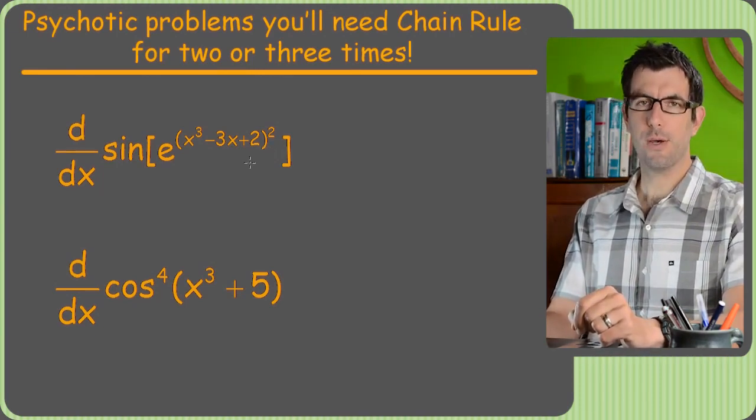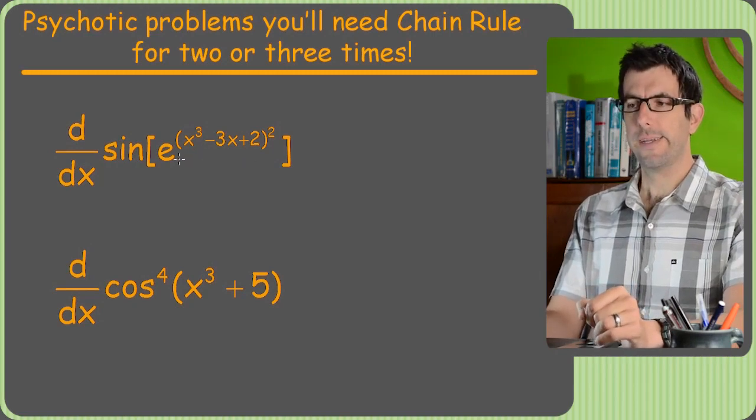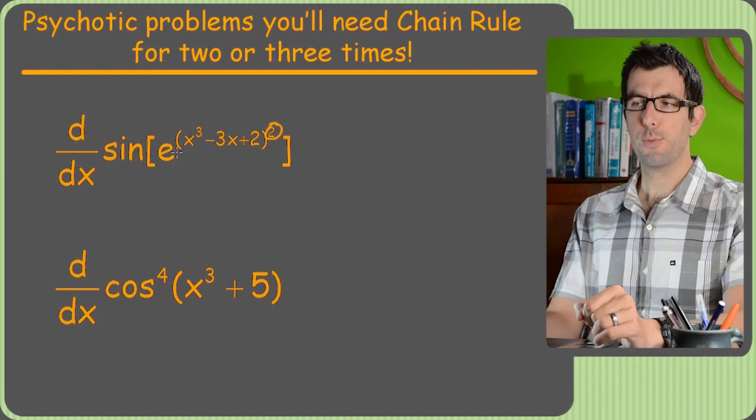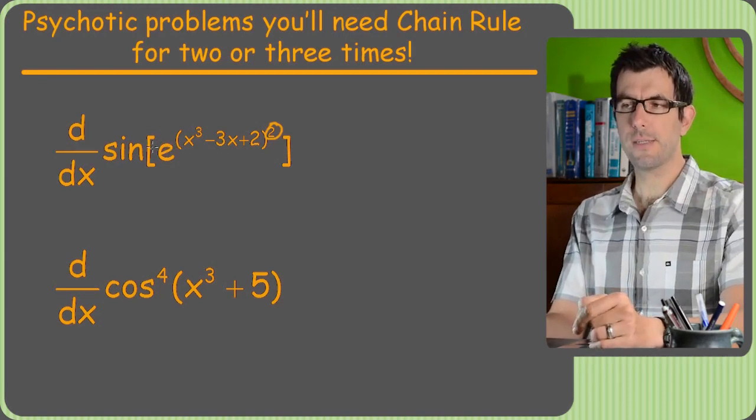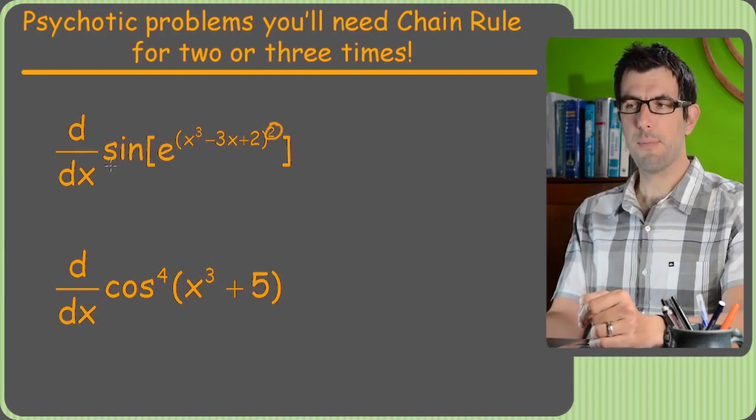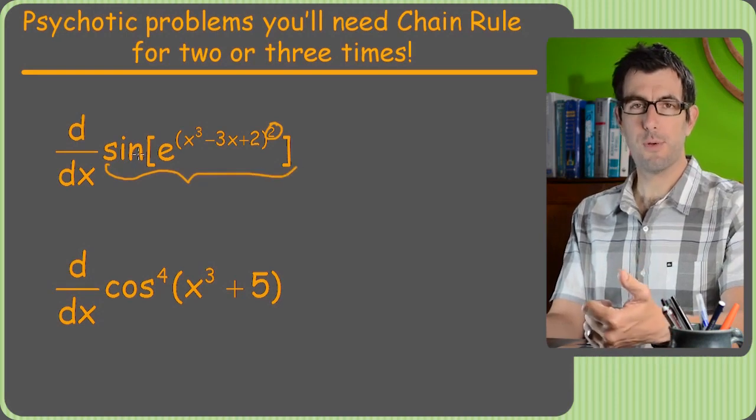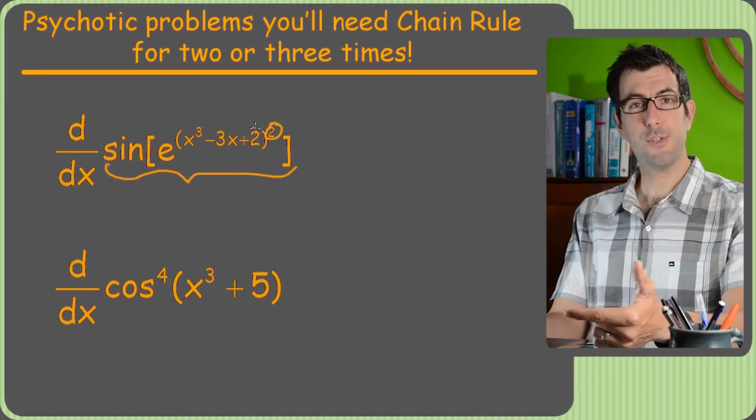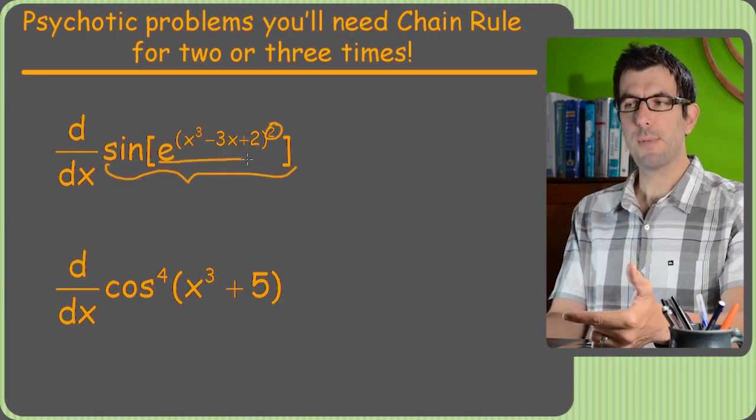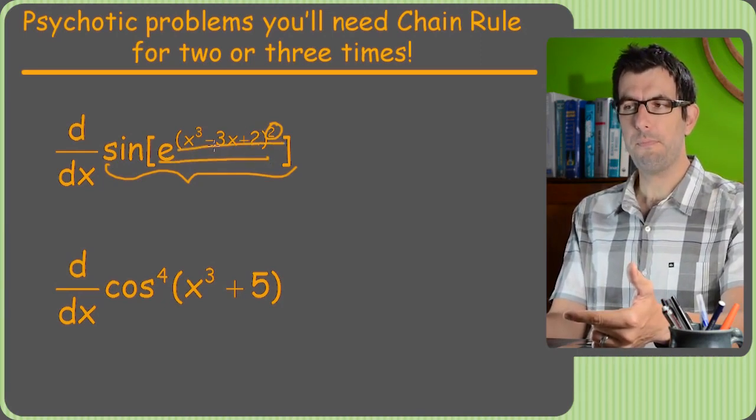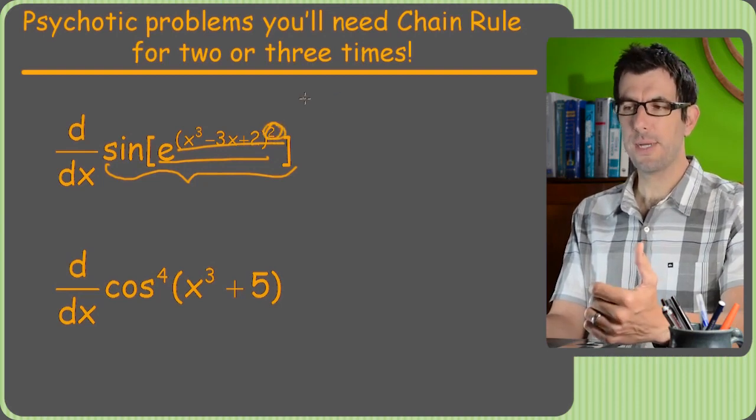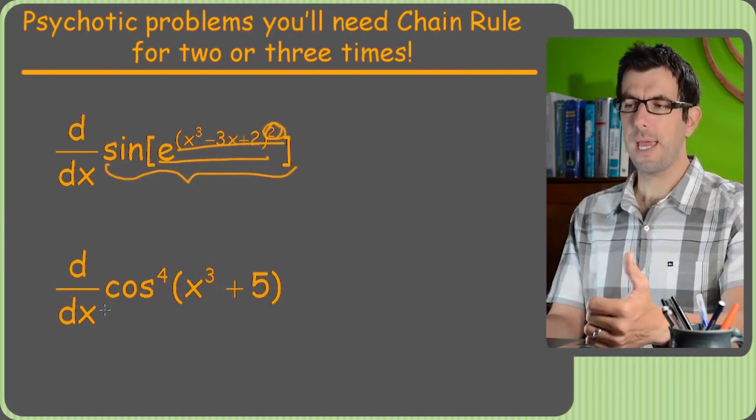And of course we can even go crazier than we just saw. Here's an exponential with a massive polynomial to a power which means it's a sine of this, right? So on this particular problem, one of those nasty ones I was talking about, you're gonna start out with the derivative of sine being cosine but then when you do your u prime on that first chain rule you have an exponential with its own chain rule but then that exponent's gonna need the chain rule because it's a power. Super crazy problem.